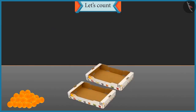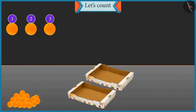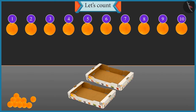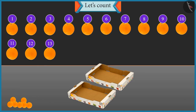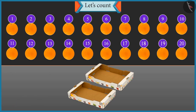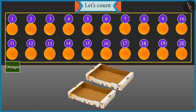Well done Chotu. Now let's count these oranges and place them in the box. One, two, three, four, five, six, seven, eight, nine, ten, eleven, twelve, thirteen, fourteen, fifteen, sixteen, seventeen, eighteen, nineteen and twenty. There are twenty oranges.